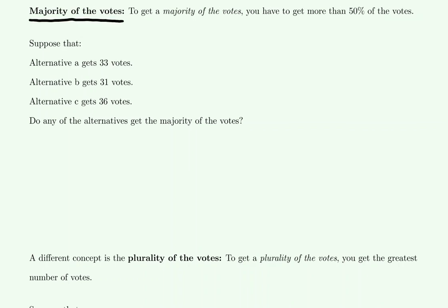In this video we are going to introduce some topics in voting theory. To begin, let's start with some definitions. If we're talking about the majority of the votes, you would need to have more than 50 percent of the votes. In order to calculate this, we need to find that we are over 50 percent, so we'd want to know based on the number of votes we have what 50 percent of that is.